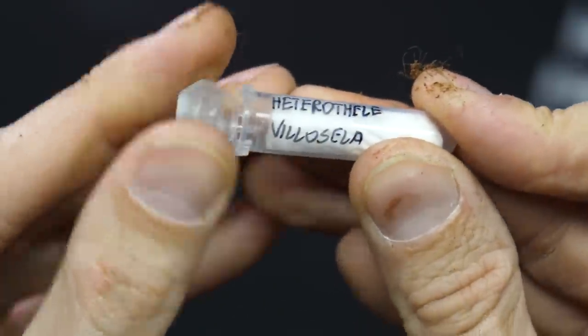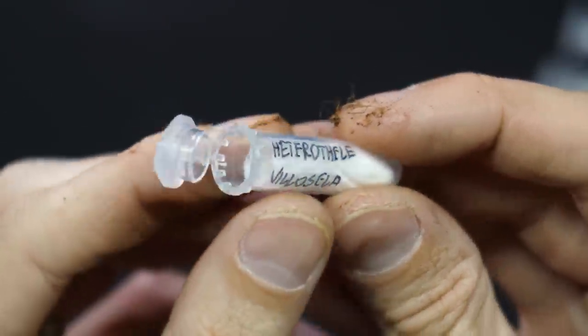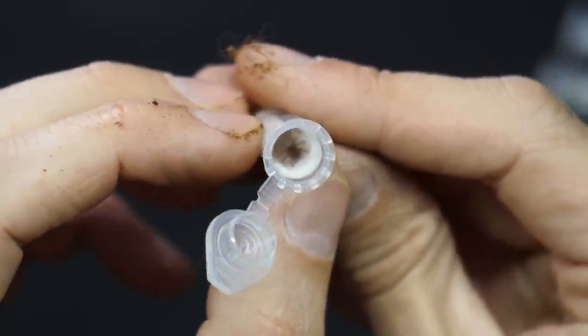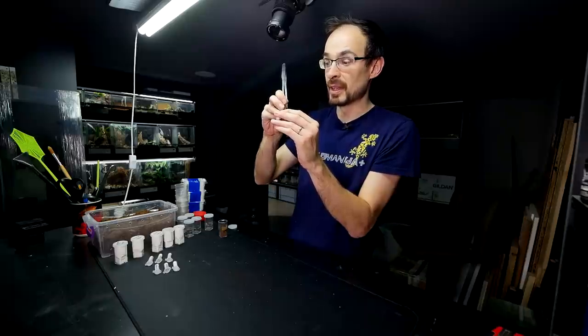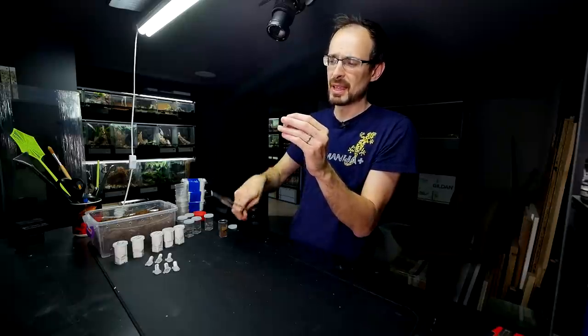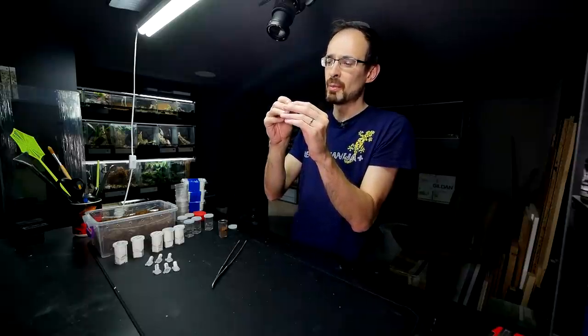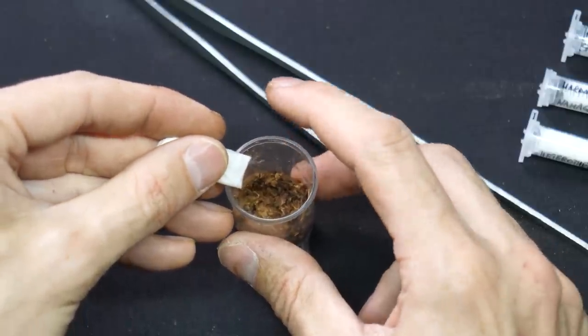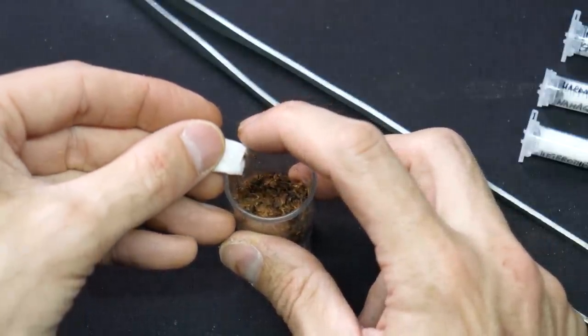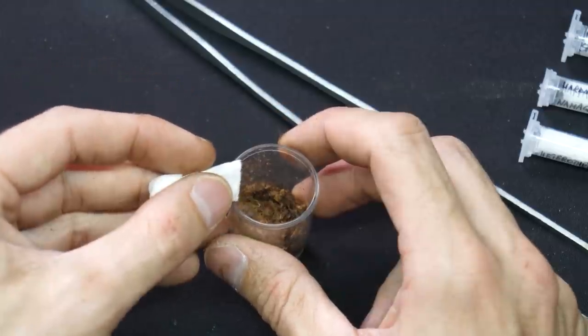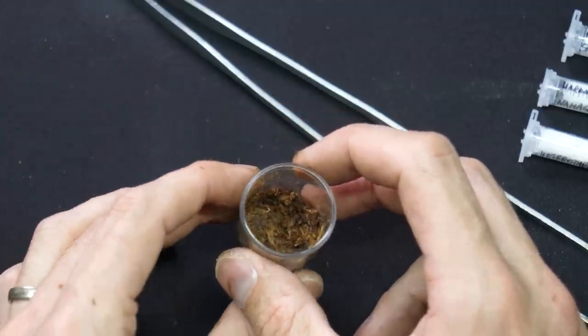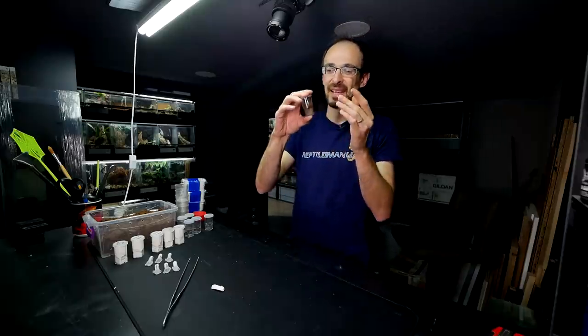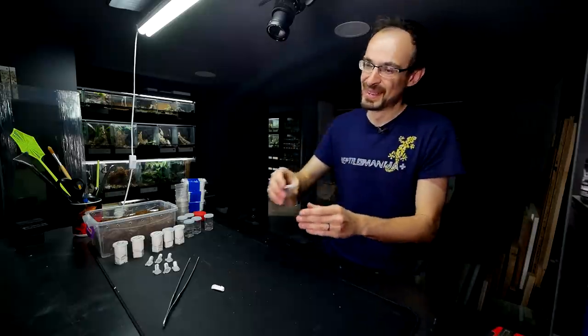Another action-packed video. So why don't we take another African tarantula and this is Heterotele villacella. I actually have one sling of this species, it is a bit bigger than this one but it is still a sling and unsexed. Having multiple slings is always a good thing because with having multiple slings you are increasing a chance to get a female. There we go, this was actually quite easy and quick even though this is also an African tarantula.